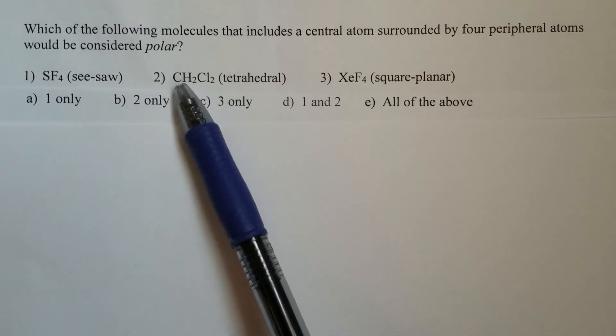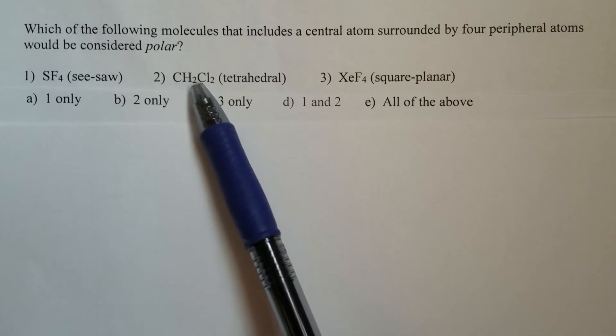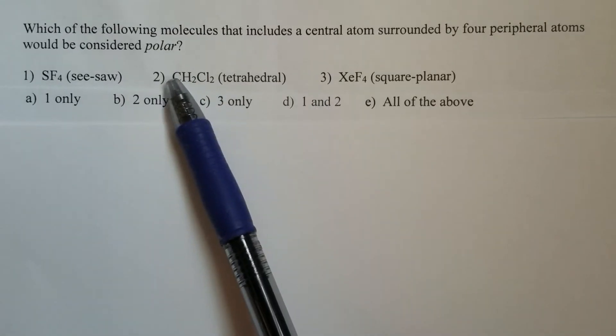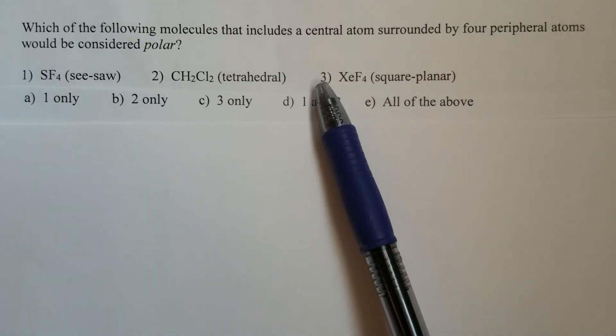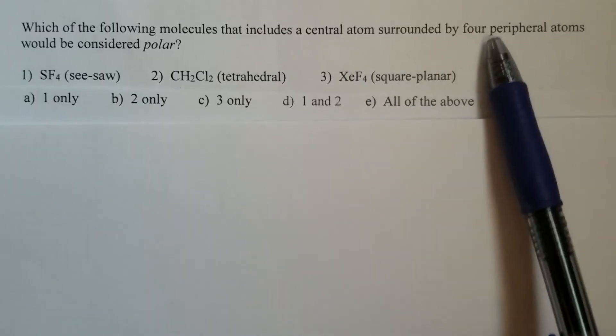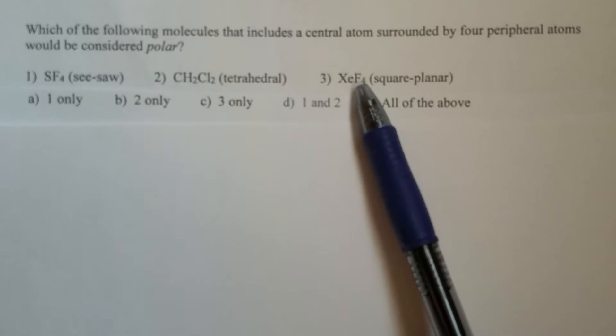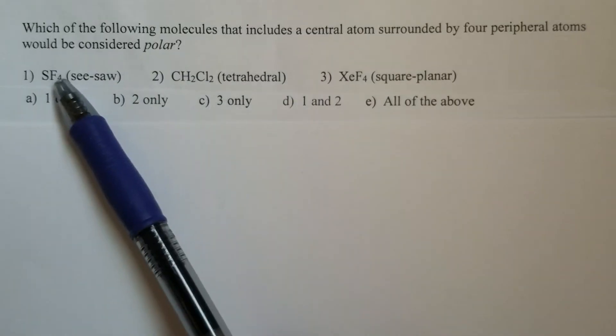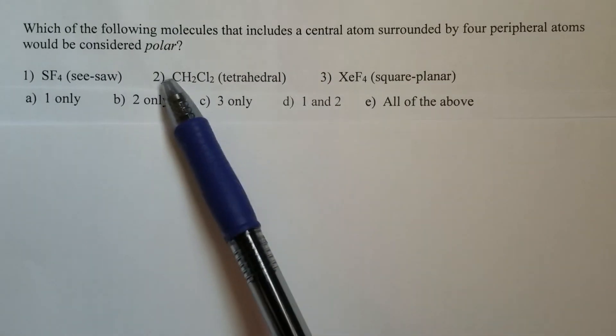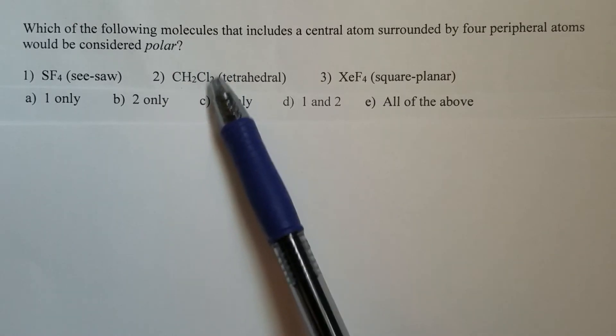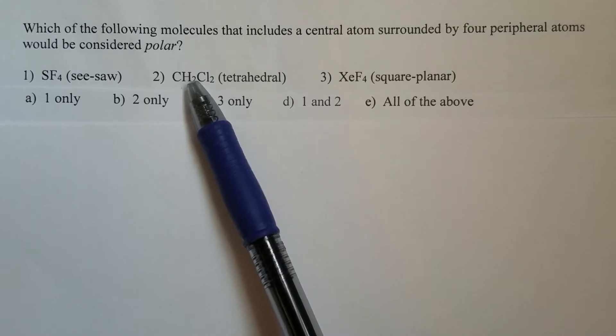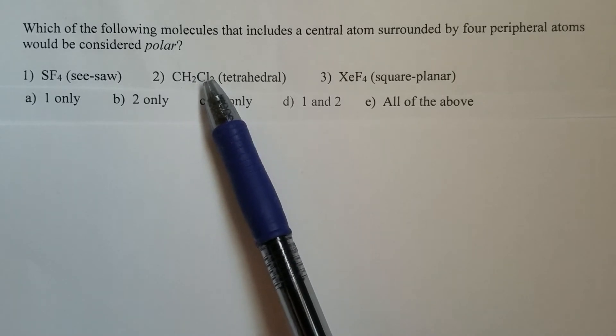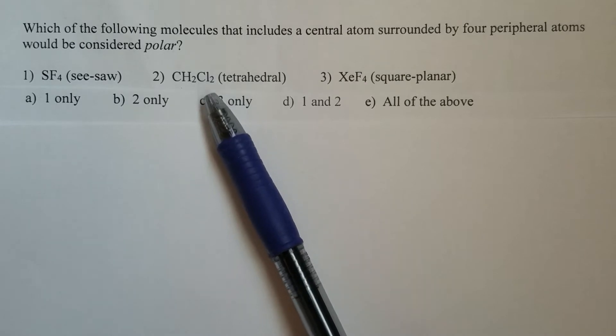The only difference among the three is in one and three the peripheral atoms are the same. They all are fluorine atoms, but here the four peripheral atoms are not the same. Two of those are hydrogen atoms and two of those are chlorine atoms.